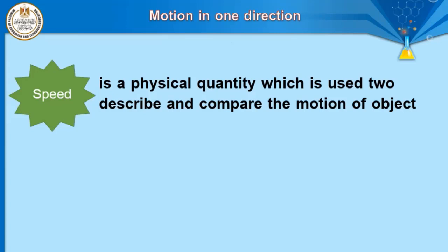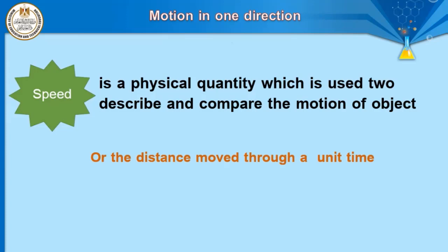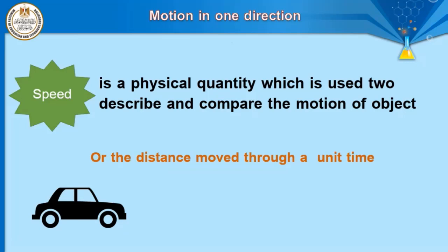Speed is a physical quantity. Speed is called a physical quantity because we can measure it. It has a measuring tool called a speedometer and has a measuring unit. Speed is a physical quantity used to describe and compare the motion of an object — for example, whether the object is fast or slow. We can define speed as the distance covered by an object in unit time.